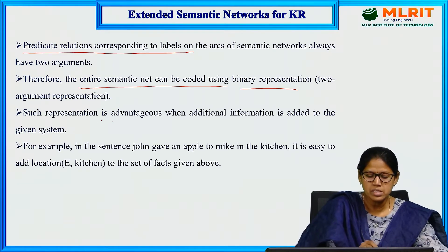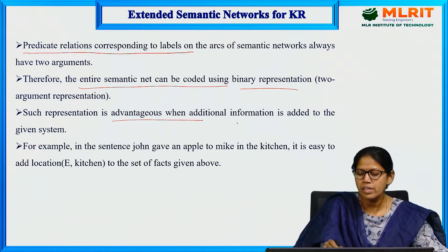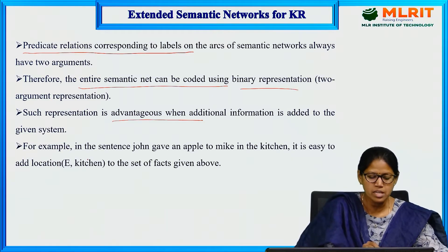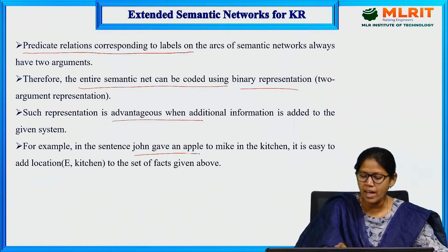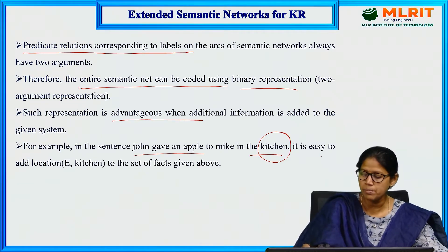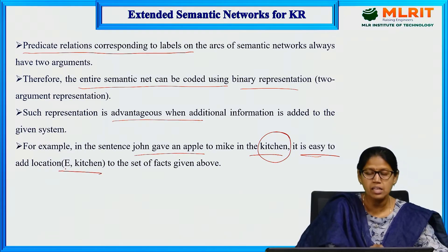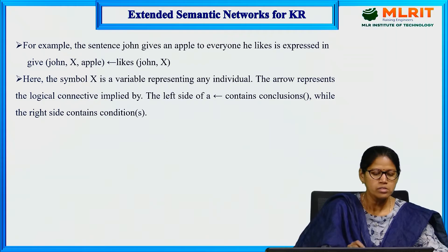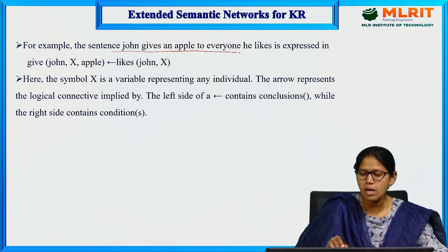Such binary representation is advantageous when additional information is added — without modifying the existing knowledge we can add new information. For example, in the sentence 'John gave an apple to Mike in the kitchen,' one more location is added. It will be represented easily as E comma kitchen, where E is the occurring event and kitchen is the location. The extra information can be added easily. For example, the sentence 'John gives an apple to everyone' will be expressed as: Give(John, X, apple).